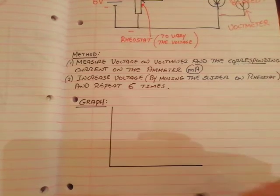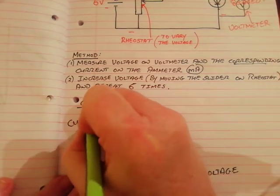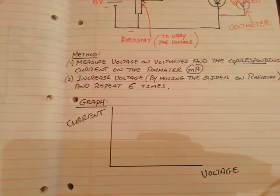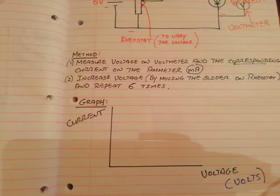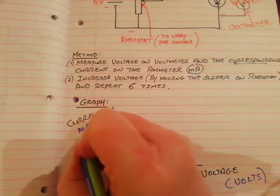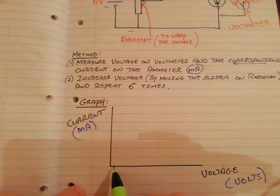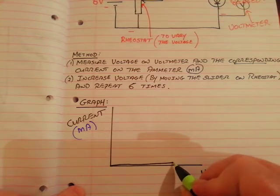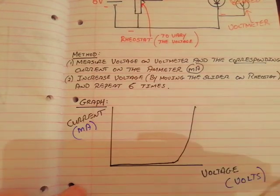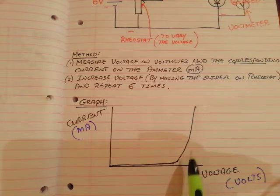The graph is a weird one. Here is voltage on the x-axis and current on the y-axis, with appropriate units — voltage in volts, current in milliamps. The graph is odd: as you make the voltage bigger, the current doesn't seem to do anything, and then all of a sudden the current just shoots up. Voltage gets bigger and bigger, the current does nothing, then it shoots up like that.